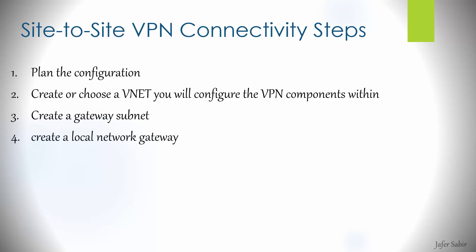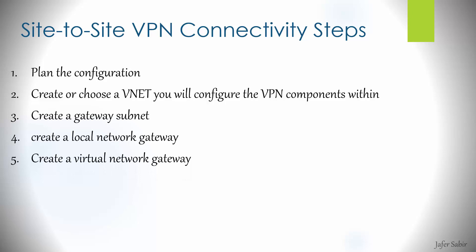For step 4, we would create a local network gateway which represents the remote VPN device — in this case my Palo Alto network device at the other end of the VPN connection. Then for step 5 we will create a virtual network gateway, where we specify the gateway type, VPN type, and so on. For step 6, we would create the connection between the two gateway devices, and in here we would add things like the pre-shared key.